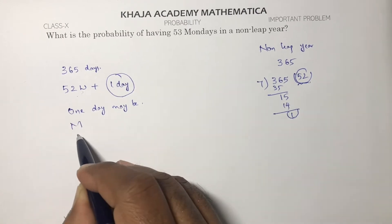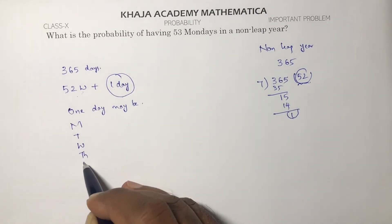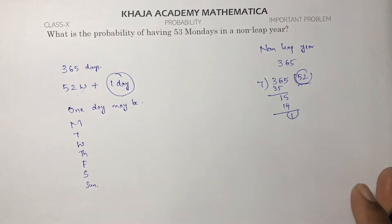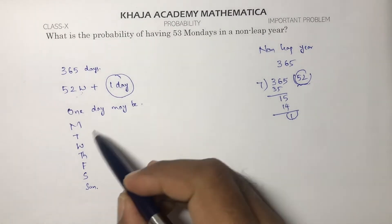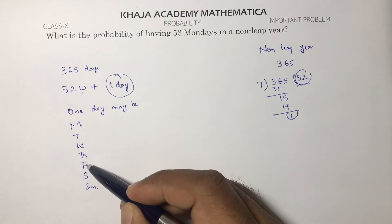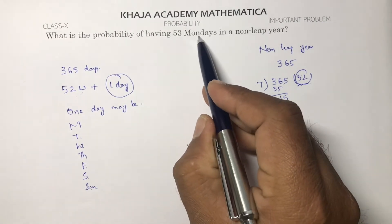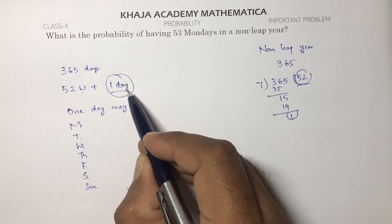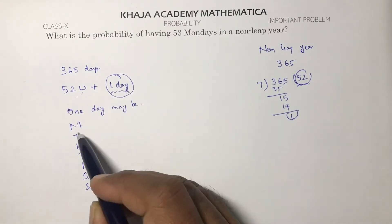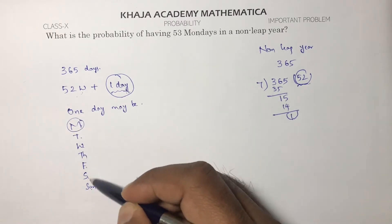This one extra day may be Monday, Tuesday, Wednesday, Thursday, Friday, Saturday, or Sunday — seven possible cases. So 53 Mondays will be decided by this one extra day, and Monday appears only one time out of these seven cases.